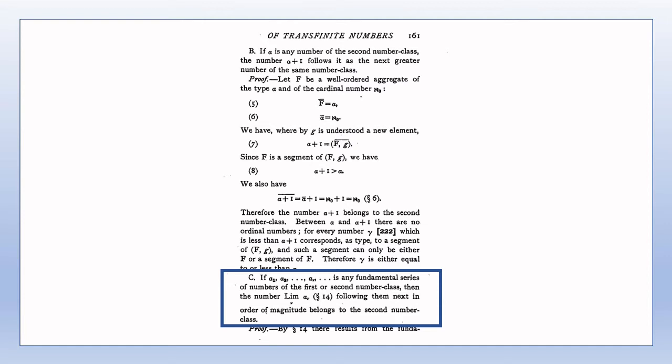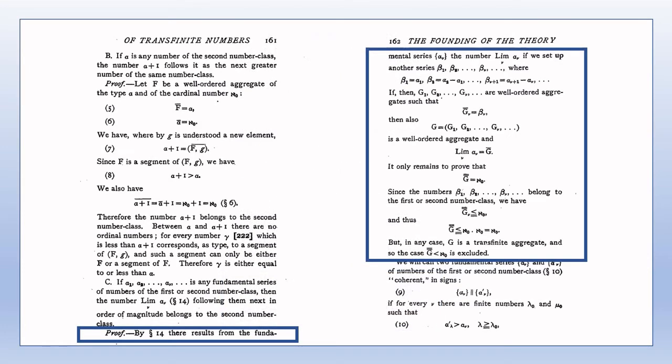Interestingly, it's noted on page 205 that Cantor unconsciously uses the axiom of infinite selection, or the axiom of choice, in Theorem C. This is indicated by Cantor choosing any fundamental series of numbers of the first or second number class, with no indication about how the numbers of this fundamental series are to be chosen. A lot of the details of this proof run along the same lines as the arguments presented on pages 156 to 158 in section 14, so I won't reiterate all of that here.